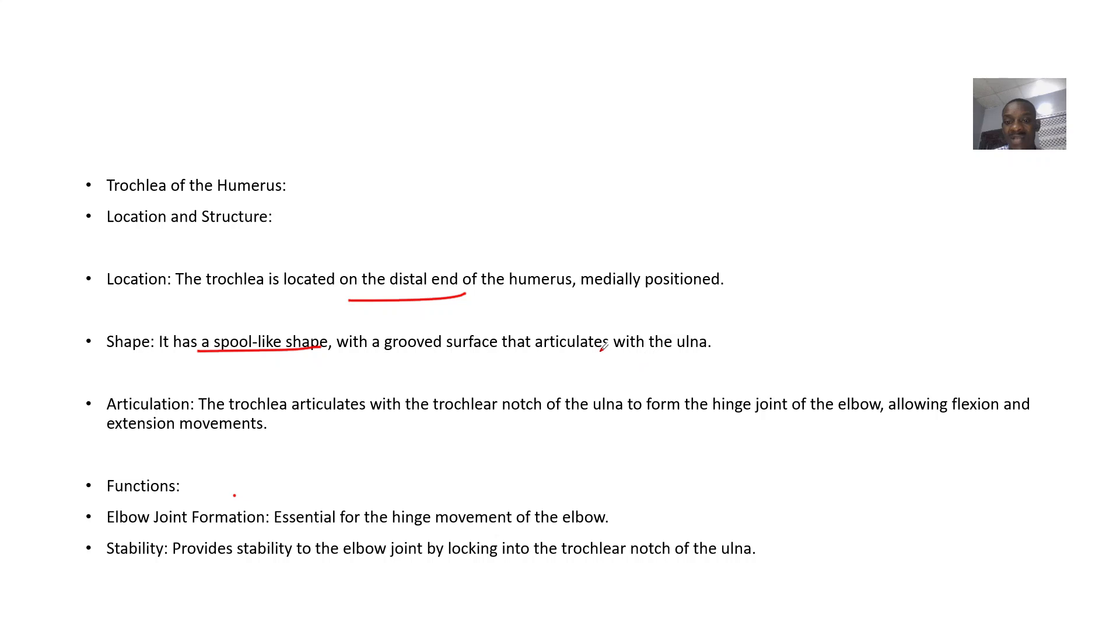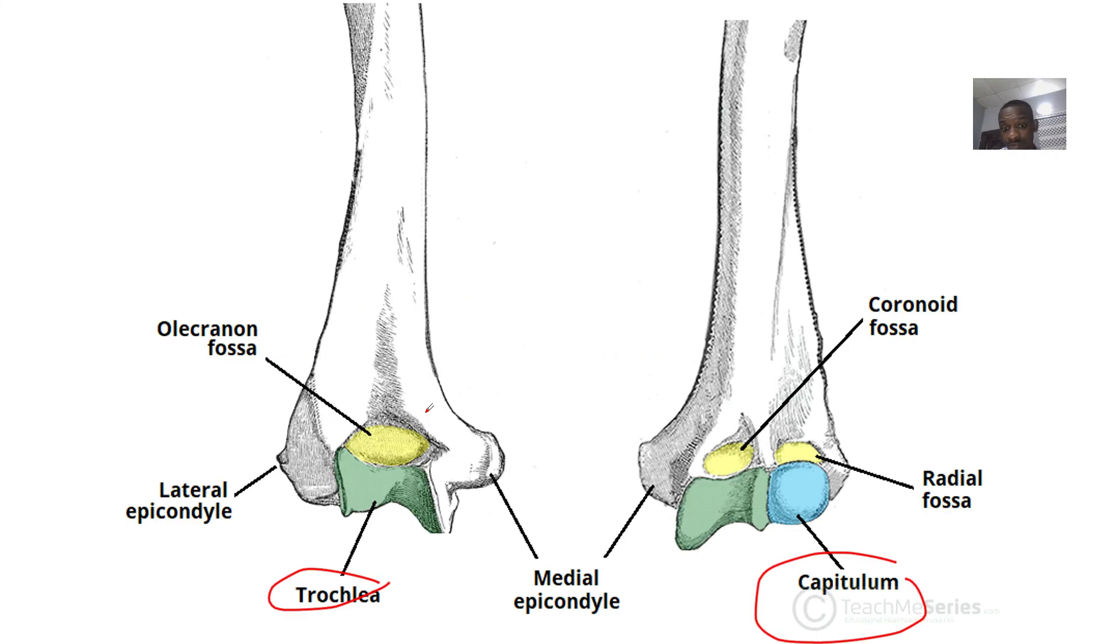with a grooved surface that articulates with the ulna. The trochlear articulates with the trochlear notch of the ulnar bone. So the trochlear together with the trochlear notch